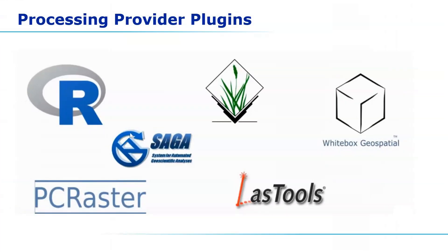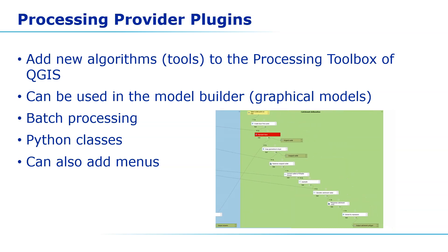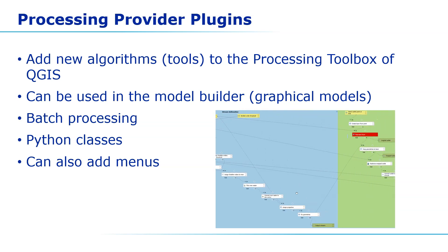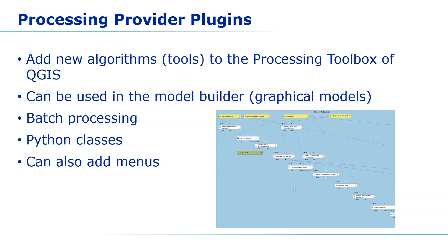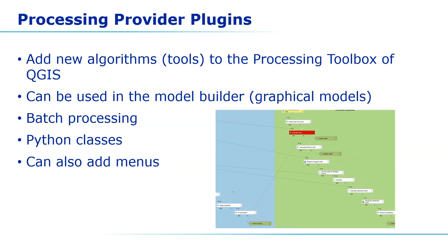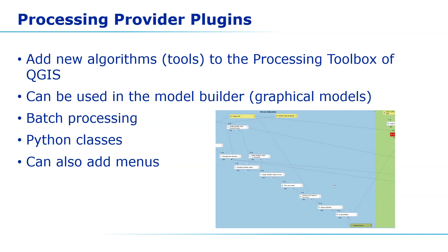Here are a few examples. These third-party processing providers are made available in QGIS using processing provider plugins that link the third-party GIS software to the QGIS processing analysis framework. Because processing provider plugins integrate very well with the processing analysis framework of QGIS, they differ from conventional plugins. They add new algorithms or tools to the processing toolbox, which can also be used in the model builder to create graphical models. It enables batch processing. Python classes are created for these plugins, besides all the other options with conventional plugins such as adding menus and other Qt interface objects.